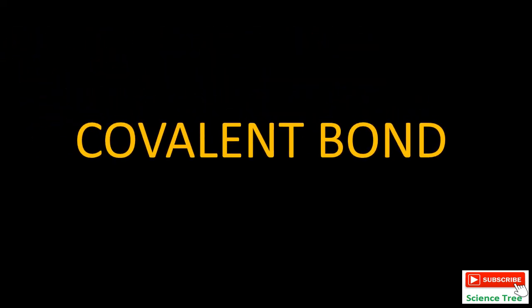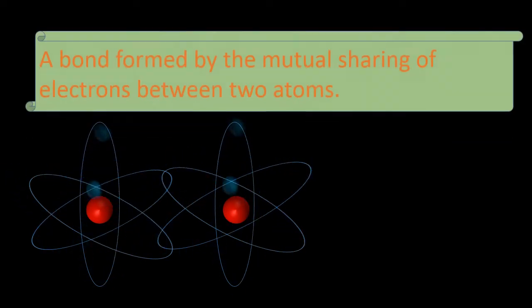Welcome to Science Tree channel. Today's topic is covalent bond from class 9, chapter number 4. A bond formed by the mutual sharing of electrons between atoms is known as a covalent bond. The minimum number of electrons shared between two atoms is one pair of electrons, and it can be more than one pair of electrons according to the need.